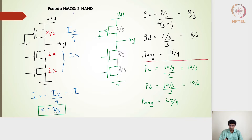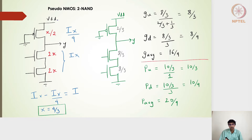For a pseudo-NMOS two-input NAND gate, we need two NMOS transistors on the pull-down side. On the pull-up side we have only one transistor whose gate is always connected to ground, meaning the PMOS transistor is always on. We need to size these transistors to design the most primitive two-input NAND gate.